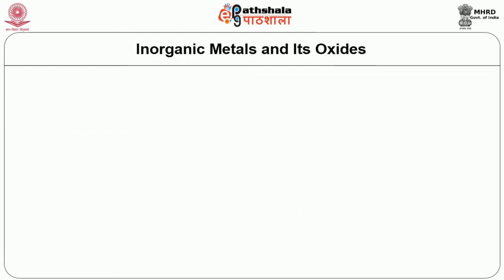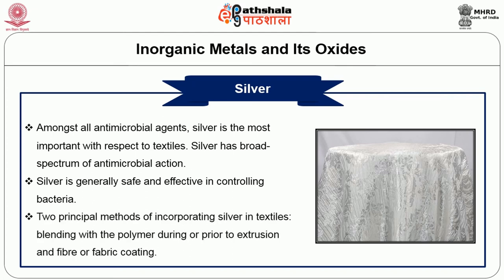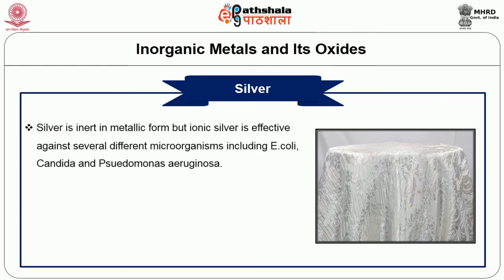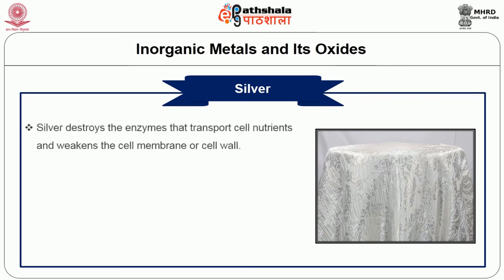Next we will see inorganic metals and their oxides. Amongst all antimicrobial agents, silver is the most important with respect to textiles. Silver has a broad spectrum of antimicrobial activity and is generally safe and effective in controlling bacteria. Two principal methods of incorporating silver in textiles are: blending with the polymer during or prior to extrusion, and fiber or fabric coating. Silver is inert in metallic form but ionic silver is effective against several microorganisms including E. coli, Candida and Pseudomonas aeruginosa. Silver in ionic form is commonly applied in fabrics for wound dressings. Silver ions react with proteins and enzymes causing structural changes in the bacterial cell wall membranes leading to cellular disintegration and the death of the bacterium. Silver also destroys enzymes that transport cell nutrients and weakens the cell membrane or cell wall.